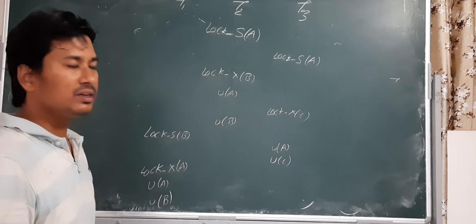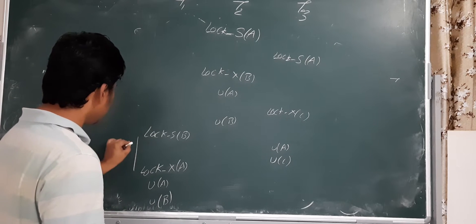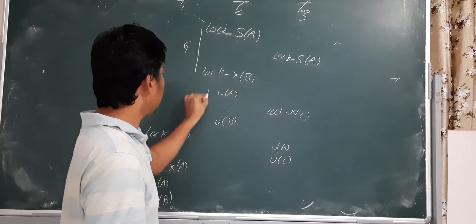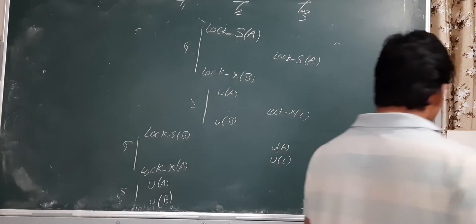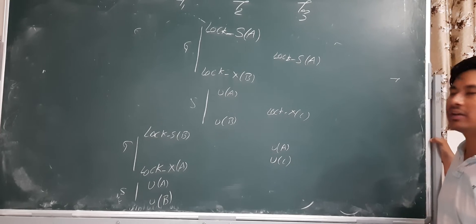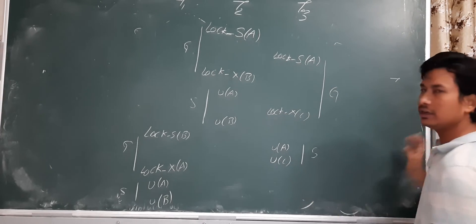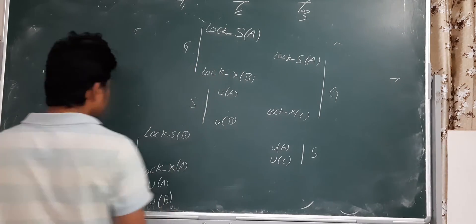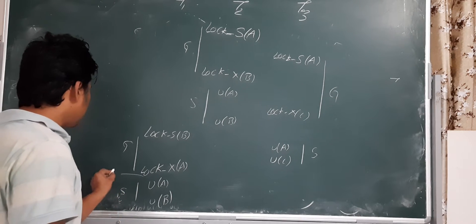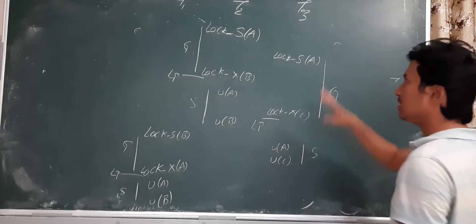Now we identify the growing phase and shrinking phase for each transaction. For T1, this portion is the growing phase and this is the shrinking phase. Similarly for T2, this is the growing phase and this is the shrinking phase. During the growing phase the transaction acquires all its locks; during the shrinking phase it releases them. The locking point is defined as when a transaction takes its final lock.